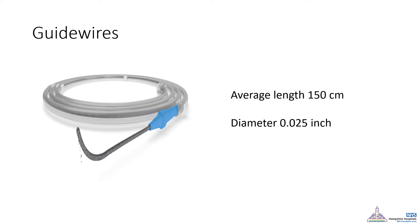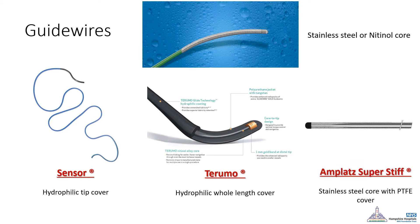The guide wire is another extremely important tool. The average length of most wire types is usually 150 cm, and the usual diameter is 0.025 inches, which is almost 2 French. The wire core is formed of either stainless steel or nitinol. The common sensor tip guide wire is the most commonly used, which has a hydrophilic tip. The Terumo wire is coated along its whole length with a hydrophilic coat, making it much floppier and easier to access different kinks and tighter areas. The Amplatz super-stiff wire is used for PCNL access due to its stiff stainless steel core with a polytetrafluoroethylene cover.